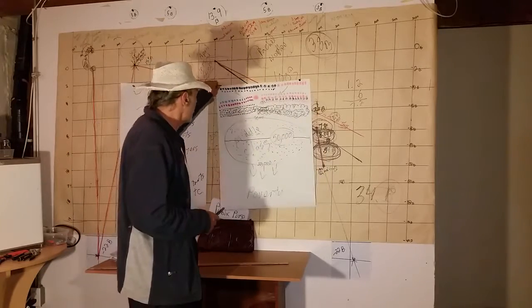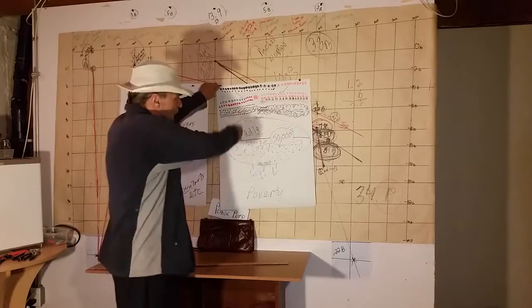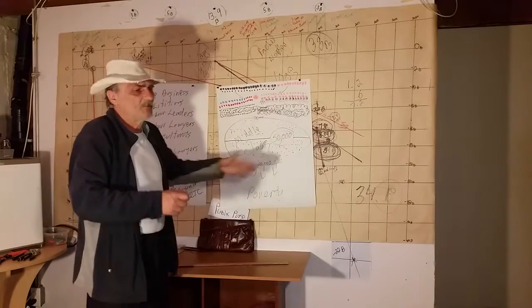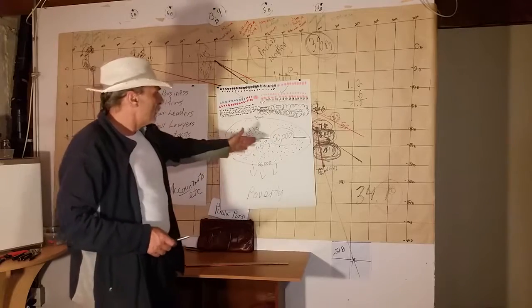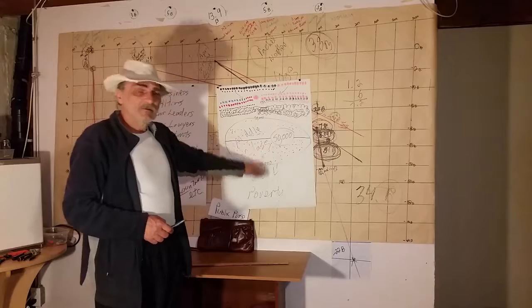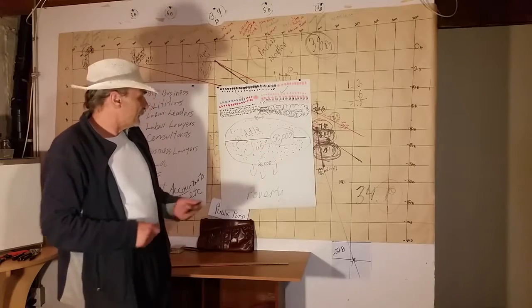Now, the middle class has got an upper and a lower, over $50,000 to be your upper, and I don't know what the exact number is, but over the median would be your upper middle class, and under the median would be your lower middle class.